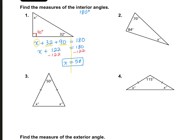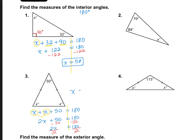Let's take a look at number 3. We need to add everything together to equal 180. This time we have x plus x plus 50 equals 180. The first step is to simplify the left side by combining like terms: x plus x is 2x, so 2x plus 50 equals 180. Subtract 50 from both sides: 2x equals 130. Divide by 2, and 130 divided by 2 is 65. So x equals 65.